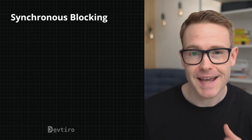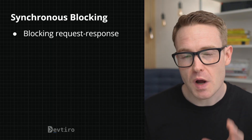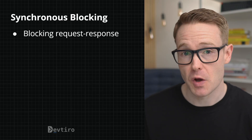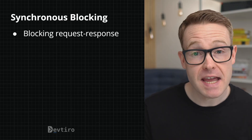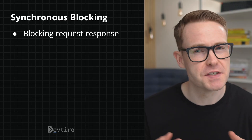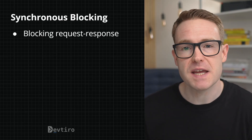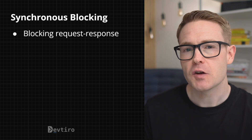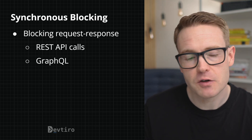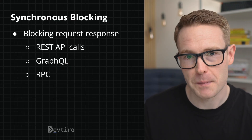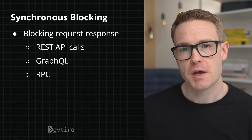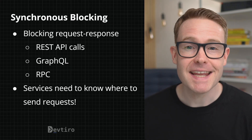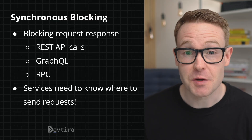That brings us to the synchronous blocking category of communication. The style here is blocking request-response, where service A sends a request to service B and expects service B to respond in a reasonable amount of time. This includes implementations like REST API calls, GraphQL, or RPC.